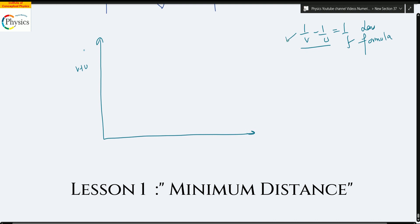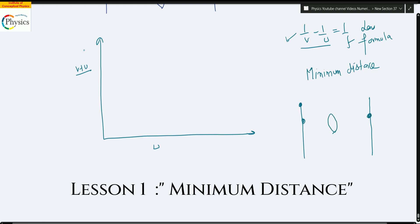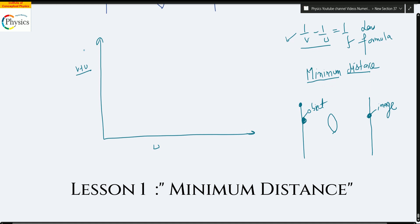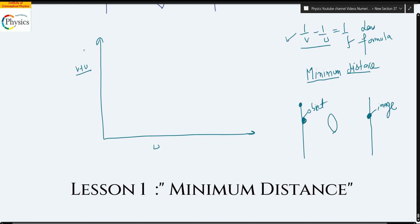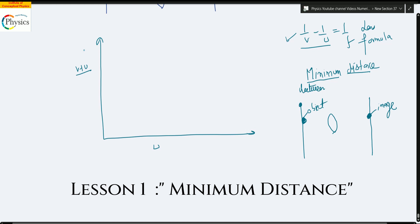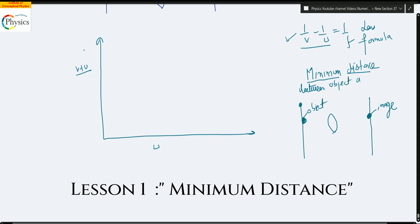We will use the lens formula to solve the problem, but I'm giving you additional conceptual knowledge. If you draw a graph of v plus u versus u, there is something called the concept of minimum distance. If you have a wall and another wall, and you have an object, a convex lens, and an image — there is a concept of minimum distance between the object and the image.